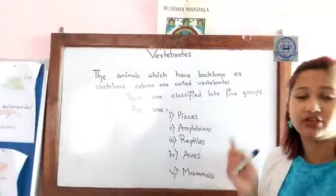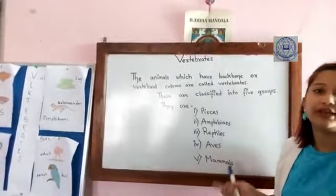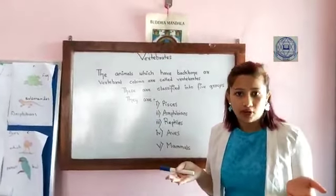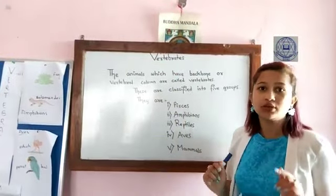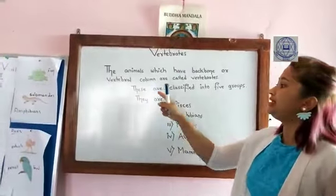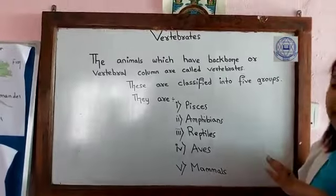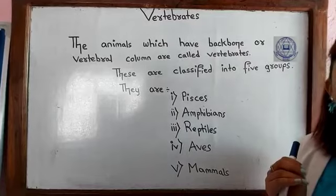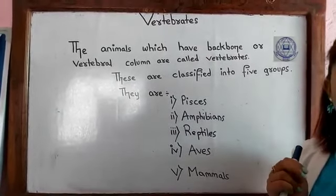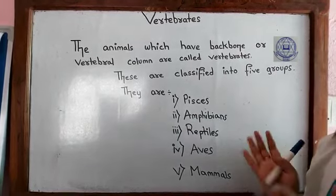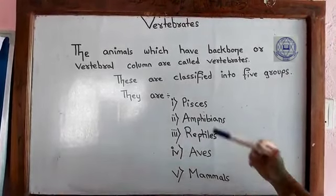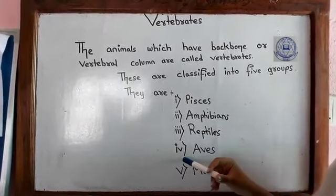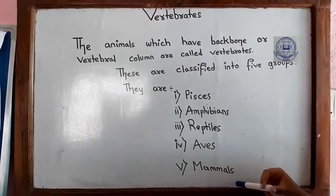Vertebrates are classified into five groups — five classes. The first one is Pisces, the second is Amphibians, the third is Reptiles, the fourth is Aves, and the fifth is Mammals.